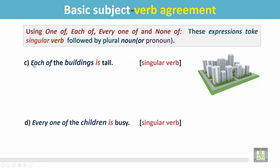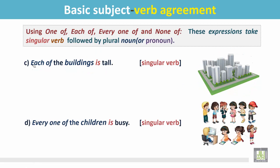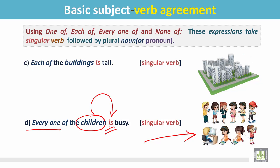Example D: Every one of the children is busy. In this picture there are many children. Each of the children is doing different activities. The sentence begins with every one. It is followed by a plural noun, children, but this plural noun is followed by a singular verb, is.